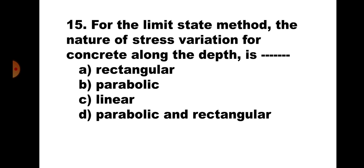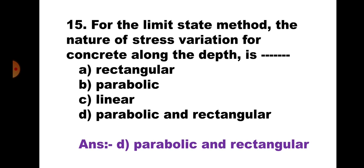Question number fifteen: For the limit state method, the nature of stress variation for concrete along the depth is — (a) rectangular, (b) parabolic, (c) linear, (d) parabolic and rectangular. From the assumptions, the stress variation in concrete up to a strain of 0.002 is parabolic, and thereafter it is rectangular up to the maximum strain of 0.0035. The correct answer is (d) parabolic and rectangular.